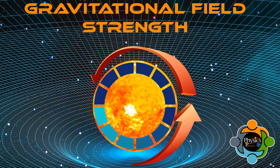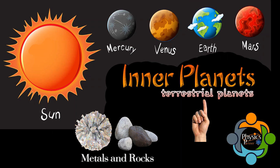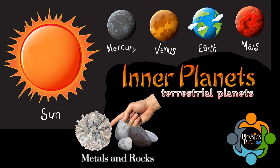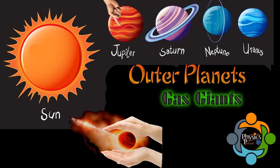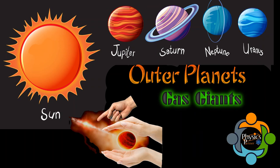Let's first discuss what are inner and outer planets. Inner planets are the four closest planets to the sun; they are also called terrestrial planets because they are made mostly of rocks and metals. The four farthest planets from the sun are called gas giants because they are made mostly of gases.